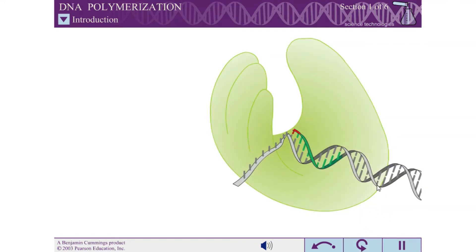In order for genetic information to be passed on from a parent cell to a daughter cell, the parental DNA must be copied into two identical daughter DNA molecules.